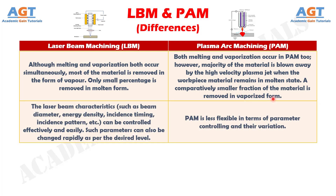Number 5: In Laser Beam Machining, the laser beam characteristics — such as beam diameter, energy density, incidence timing, and incidence pattern — can be controlled effectively and easily, and such parameters can also be changed rapidly as per the desired level. Whereas Plasma Arc Machining is less flexible in terms of parameter controlling and their variation.